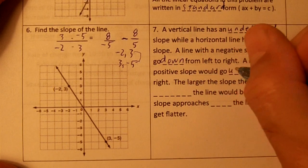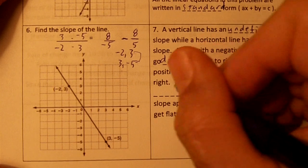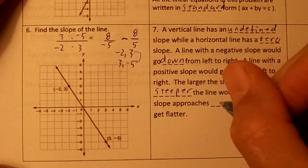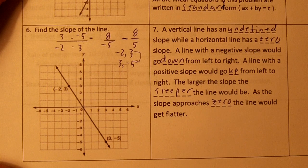A line with a positive slope would go up from left to right. The larger the slope the steeper the line would be. As the slope approaches zero the line would get flatter.